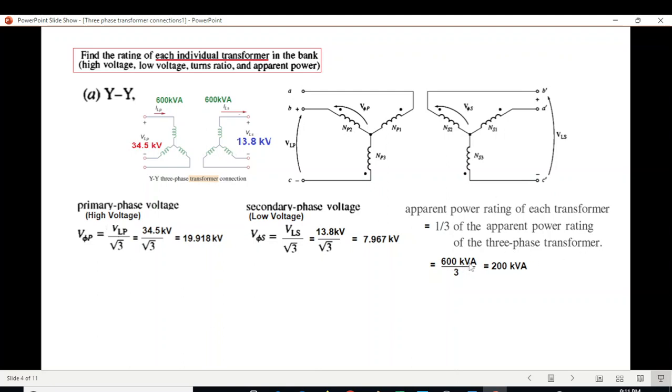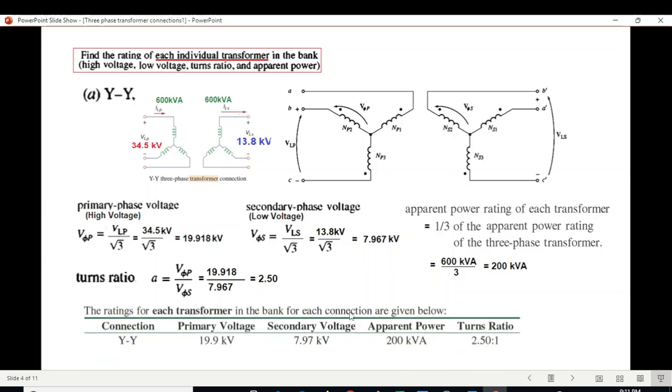The apparent power rating of each transformer will be one-third of the apparent power rating of the three-phase system. Total power rating given is 600 kVA divided by 3 equals 200 kVA apparent power of each transformer. Finally we calculate turn ratio as V_primary divided by V_secondary, which equals 2.5. In table form: Y-Y connection primary voltage 19.9, secondary voltage 7.97, turn ratio 2.5, apparent power 200 kVA.